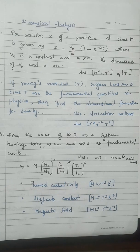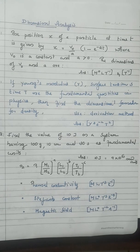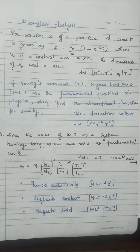Next question: if Young's modulus, surface tension, and time are taken as fundamental quantities, find the dimensional formula for density. You can derive the equation for density in terms of Y, S, and T by writing density D proportional to Y^a × S^b × T^c, then solving for the exponents a, b, and c.